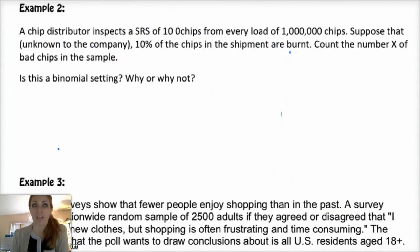All right, so now we're getting into the normal approximation for the binomial distribution. And we'll start with an example. So you have a chip distributor, like Lays or something, and they inspect a simple random sample of 100 chips from every load of a million chips. So, imagine lots of chips. Okay, suppose, unknown to the company, 10% of the chips in the shipment are burnt. Cut the number X of bad chips in the sample.